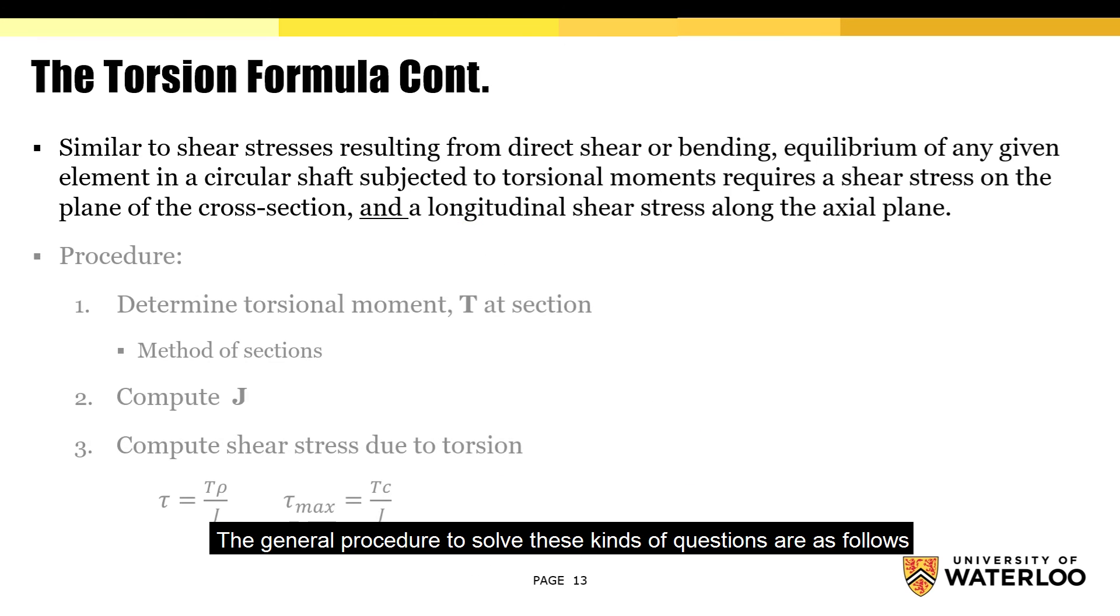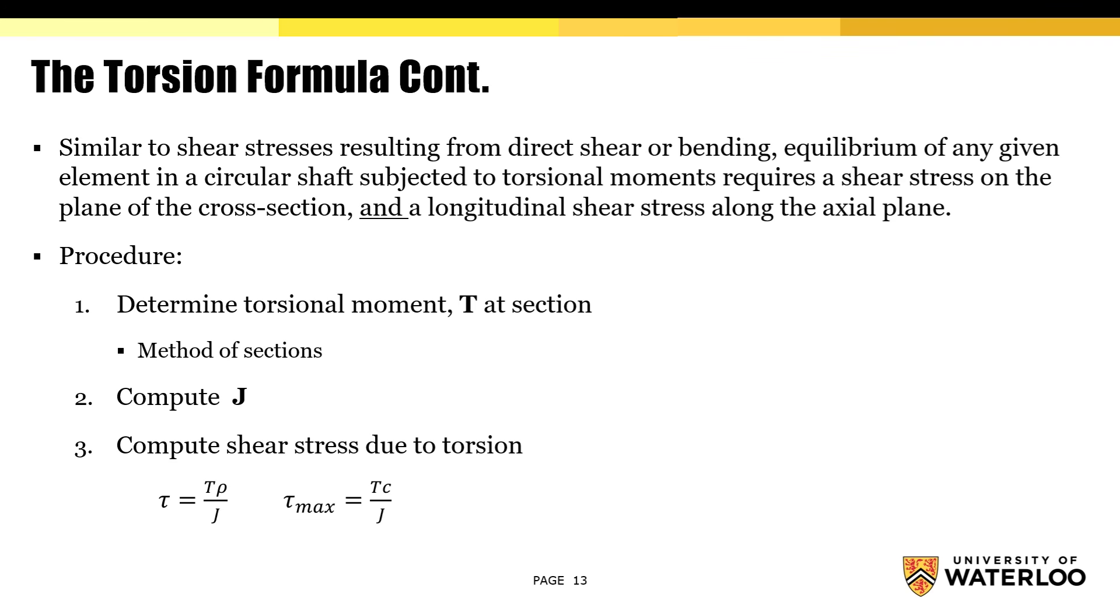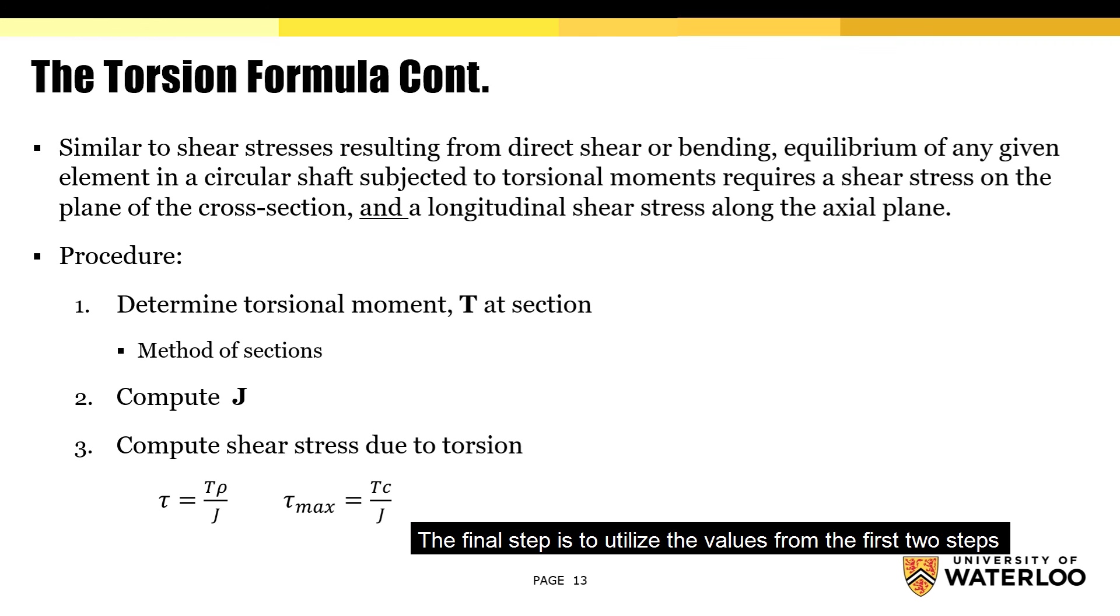The general procedure to solve these kinds of questions are as follows. The first step is to determine the torsional moment T at the section of interest through the method of sections. The next step is to compute the polar moment of inertia J. The final step is to utilize the values from the first two steps to determine the shear stress at the point of interest.